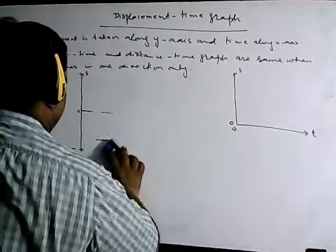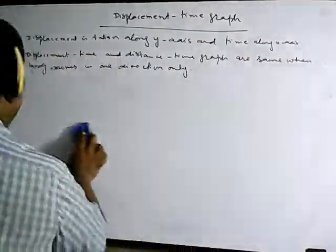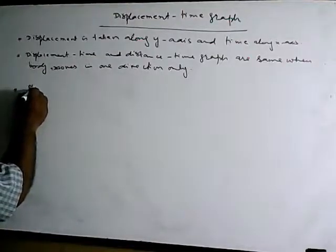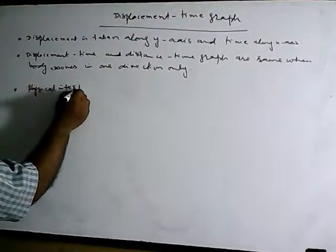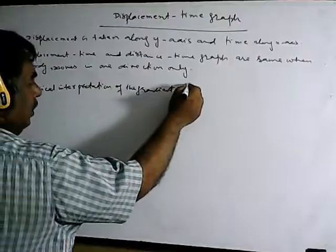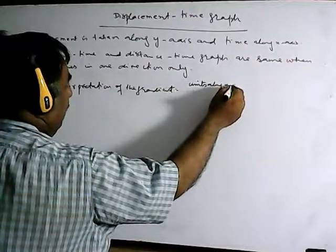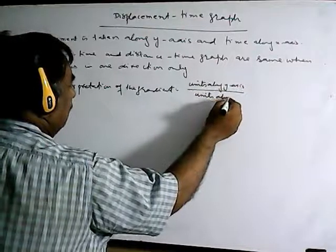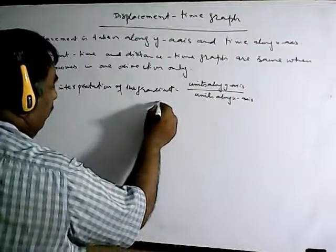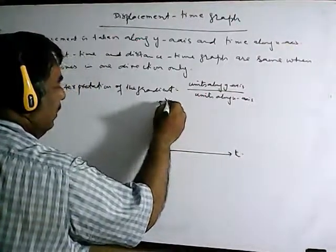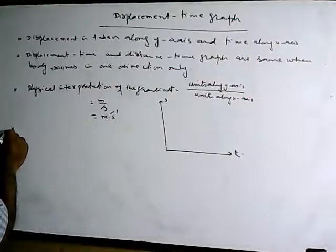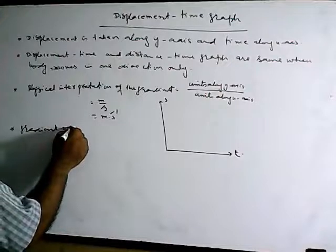Now, what should be the gradient and what should be the y-intercept? A hint: if you want to find the physical interpretation of the gradient, always first write units along the y-axis divided by units along the x-axis. From this quantity, you can determine what the gradient will be representing. For example, for a displacement-time graph, the units are meters per second.